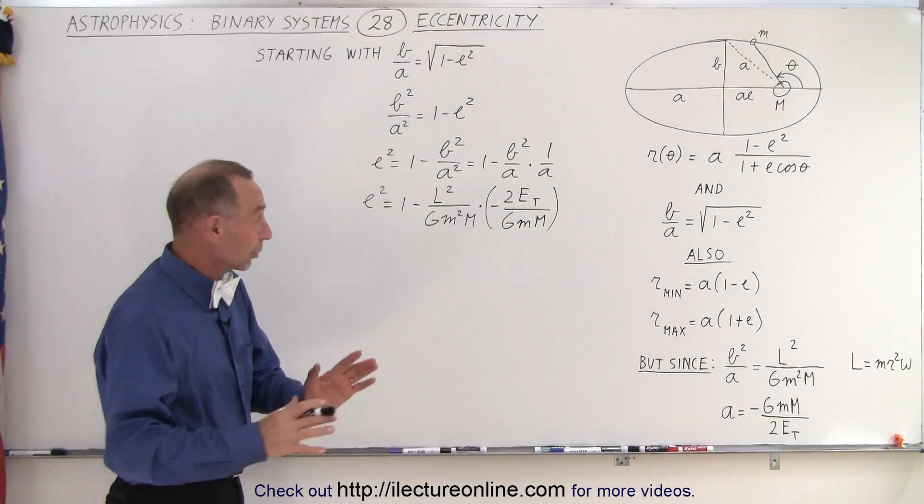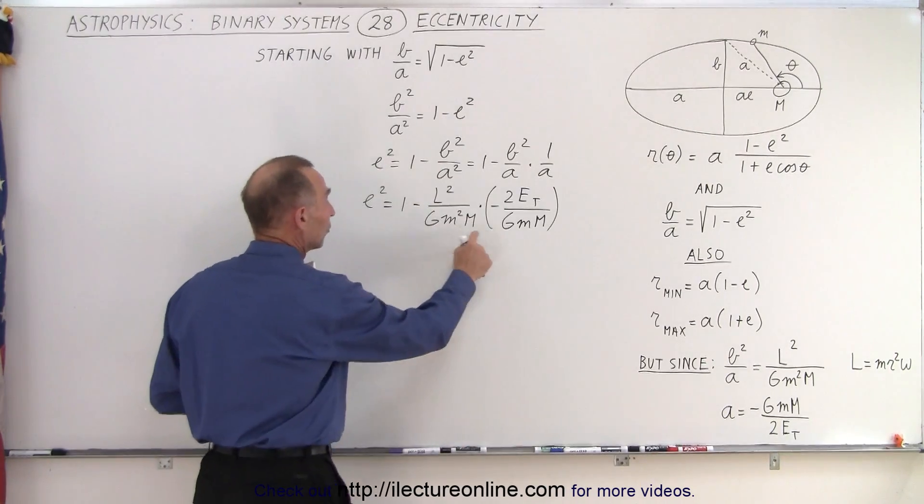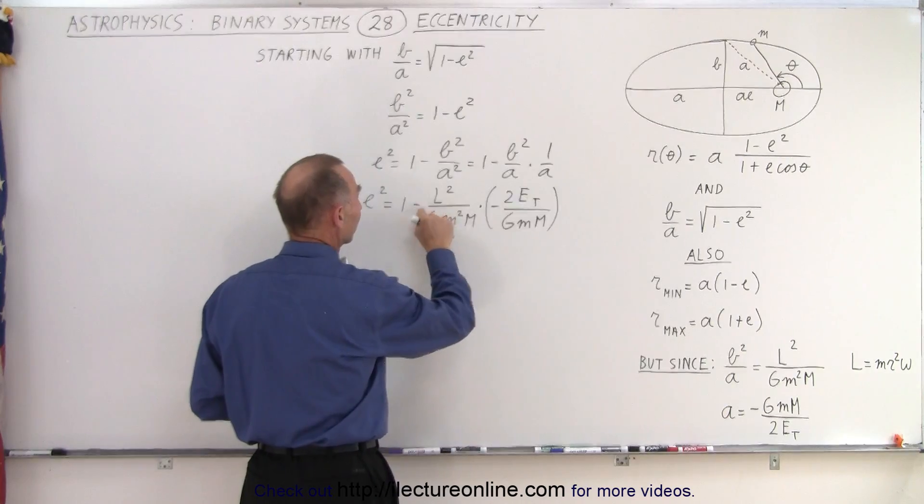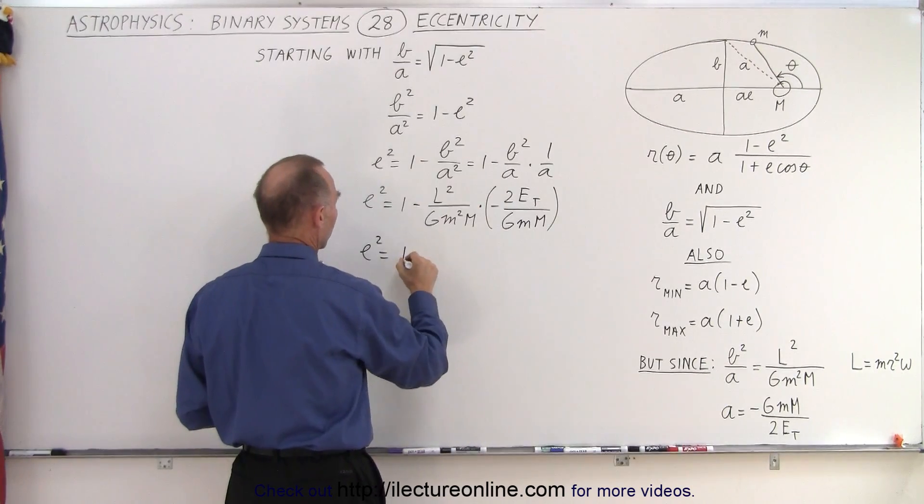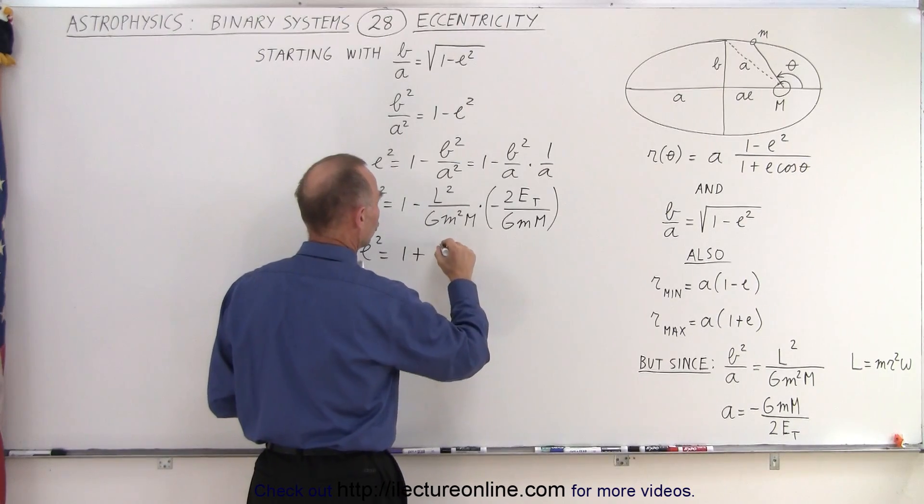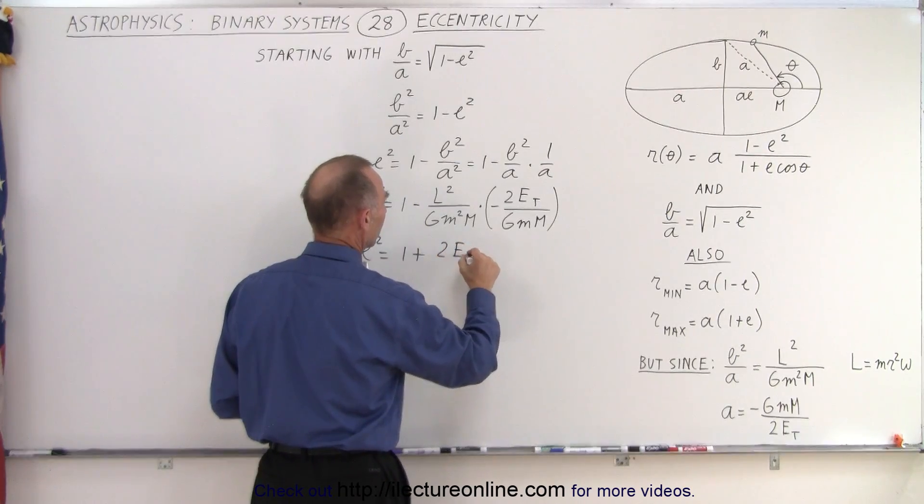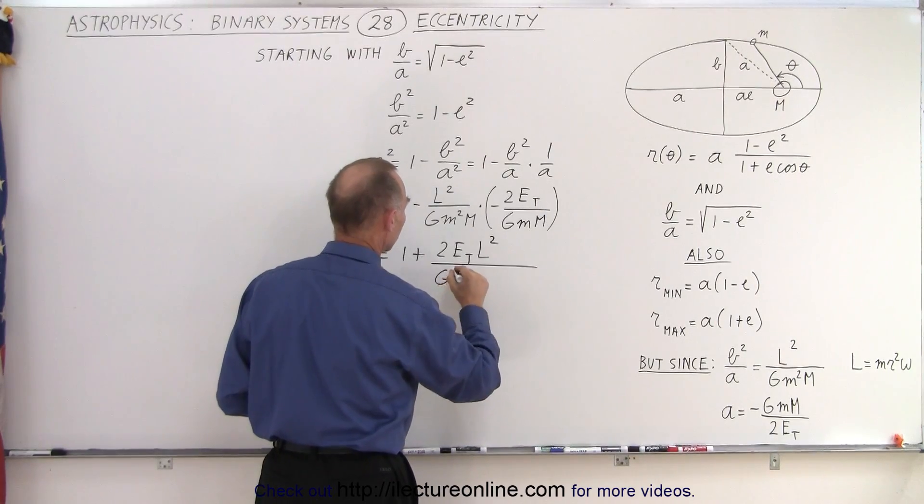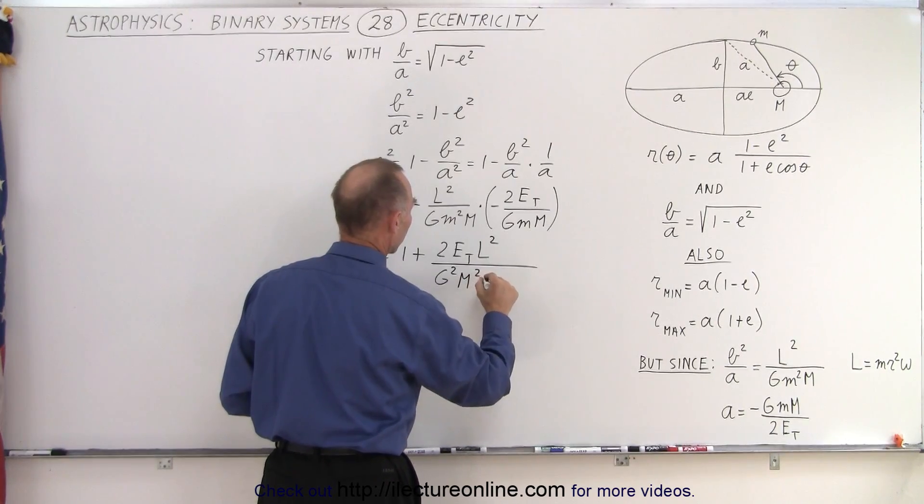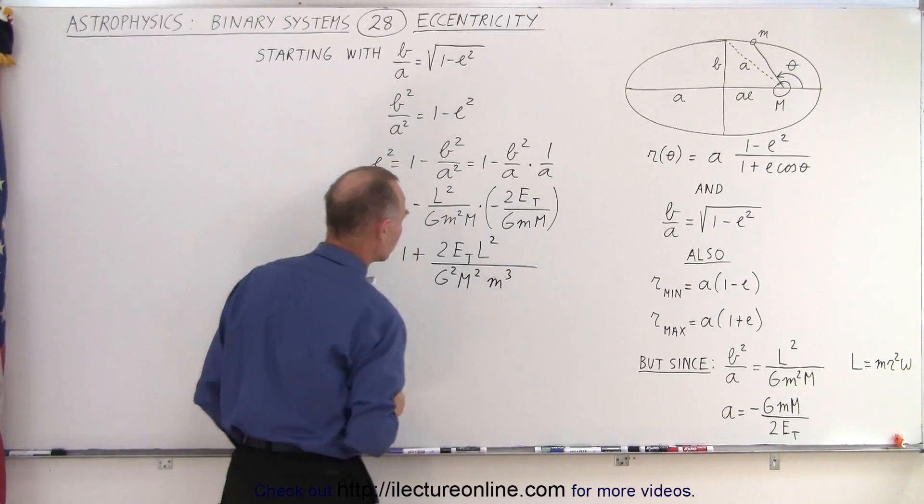At this point, we're going to combine that by multiplying these two out. And this negative and this negative becomes a positive. So now we have e squared is equal to 1 plus 2 times the total energy times the angular momentum squared divided by G squared big M squared little m cubed.